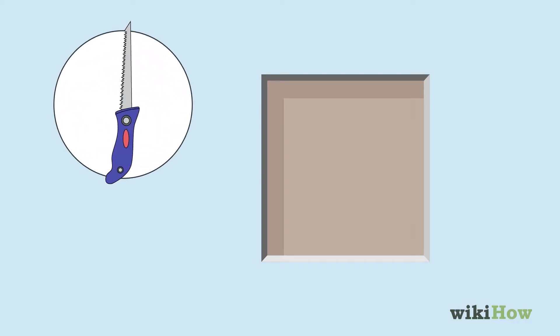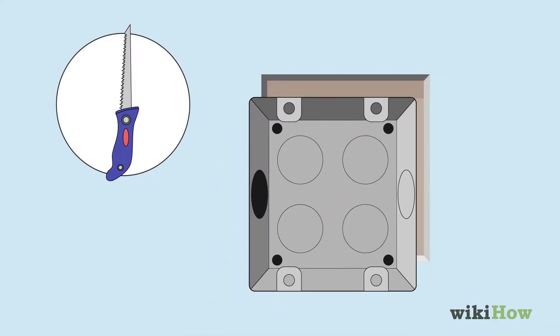Next, use a drywall saw to cut out a hole in the right size and shape for the outlet box you want to install.